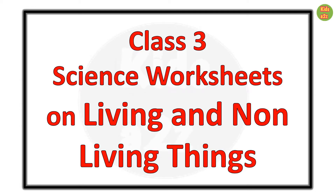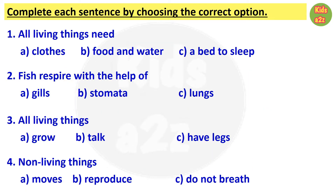Class 3 Science worksheets on living things and non-living things. For each question, three answers are given and kids need to choose the correct answer. Question 1: all living things need — answer is food and water. Question 2: fish respire with the help of — answer is gills. Question 3: all living things — answer is option A, grow. Question 4: non-living things — answer is do not breathe.